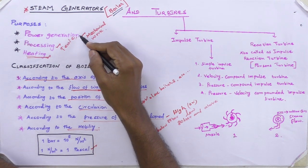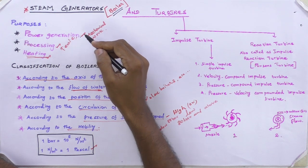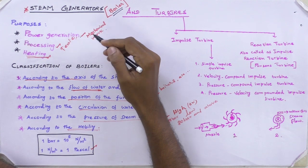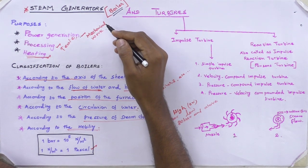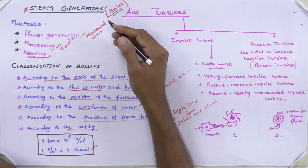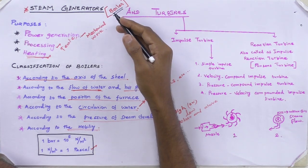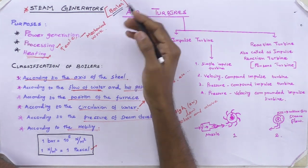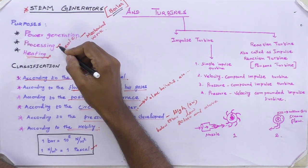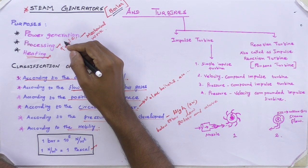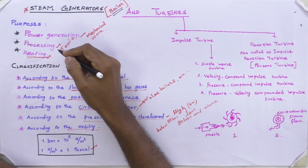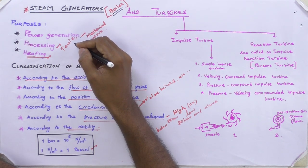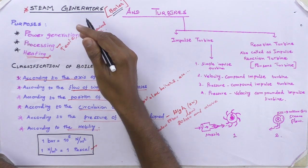If you are considering power generation, the steam is used to drive prime movers like a steam engine or a steam turbine, which in turn drives an electric generator to produce electricity. The power obtained from the steam turbine and steam engine can also be used to perform mechanical work. Steam is also used for industrial processing such as sizing, bleaching, etc. in textile industries, chemical plants, sugar plants, and other industries.